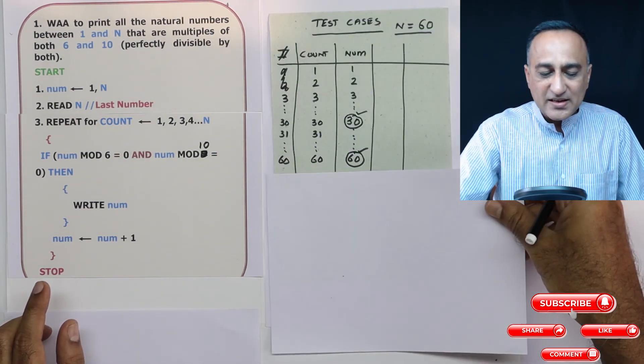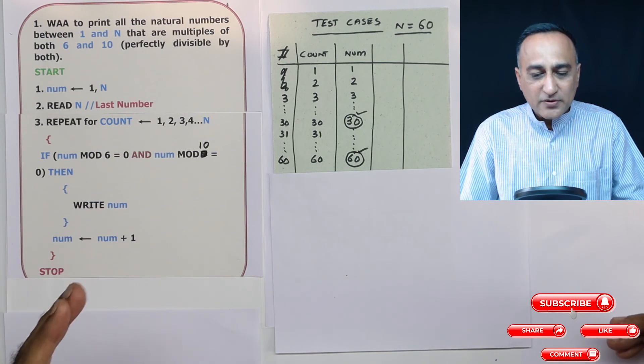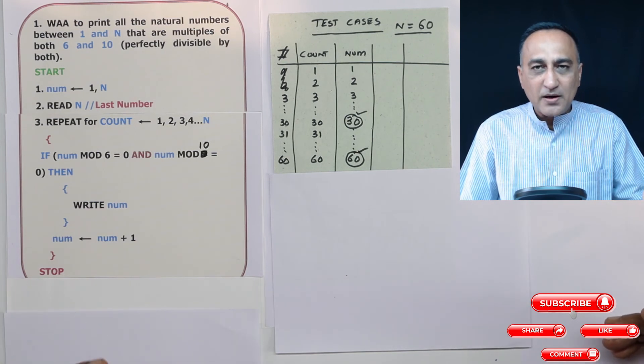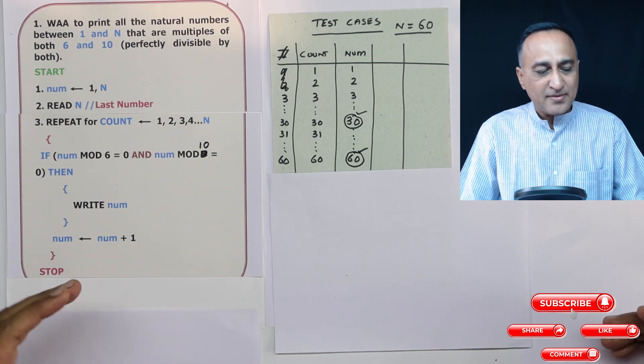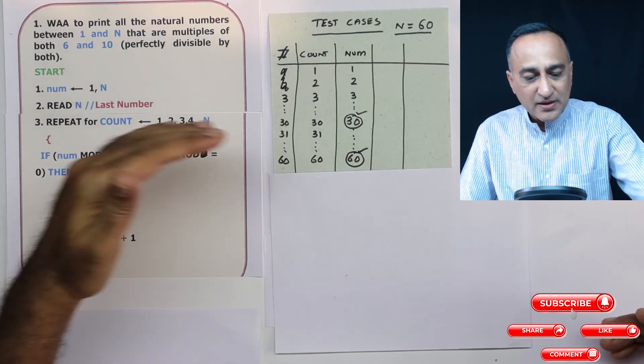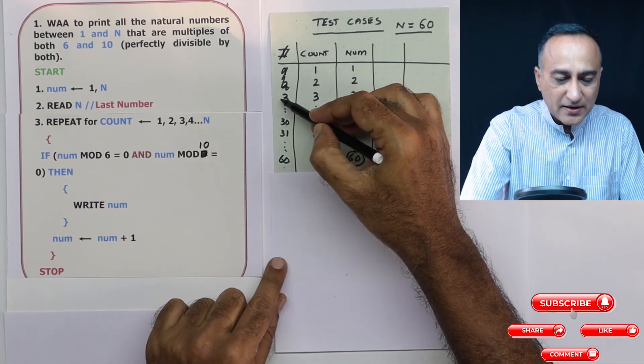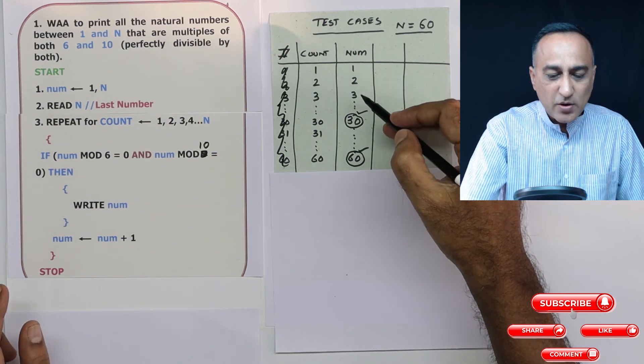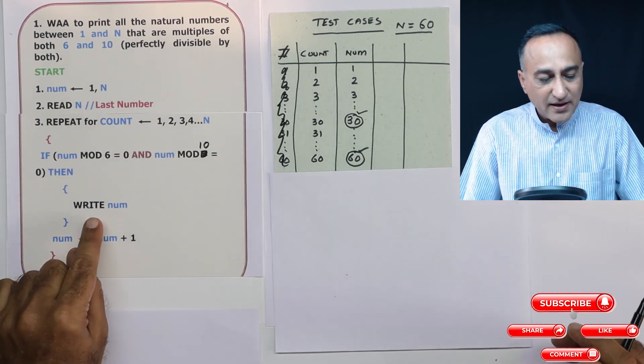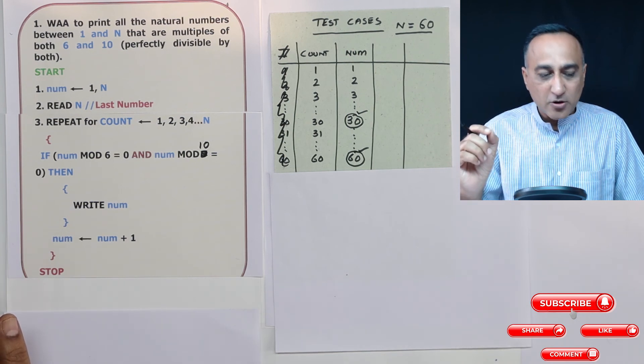What you can do is you can increase the range of n to say like 90 or 120. Most of the time, or in fact every time, it will be multiples of 30 which will be divisible by both 6 and 10. So take a test value, run through the loop, see what happens to the value of count and number. See how they change based on the changing values of count and number. Try to figure out which all numbers get printed on the output.